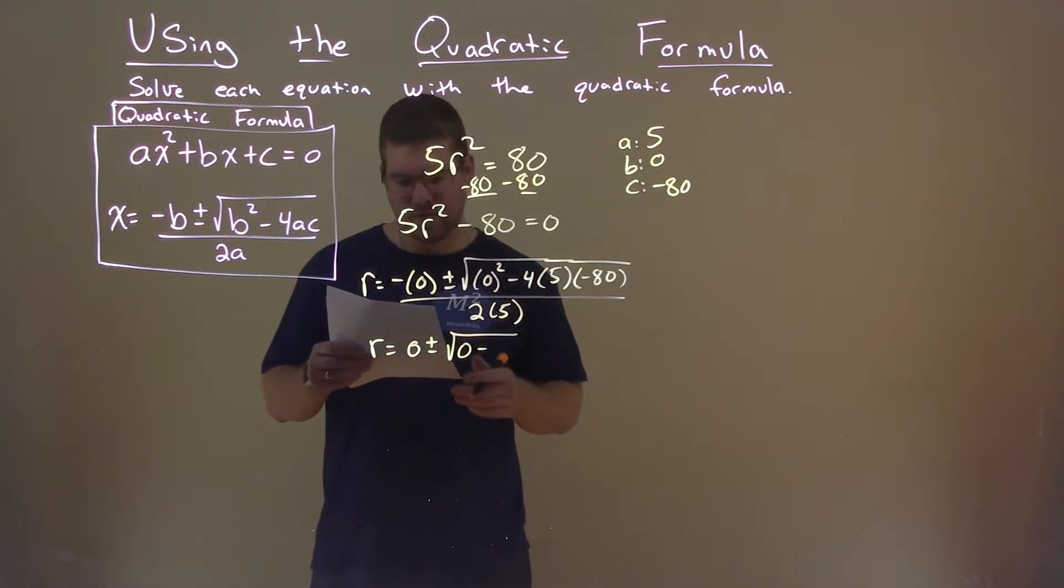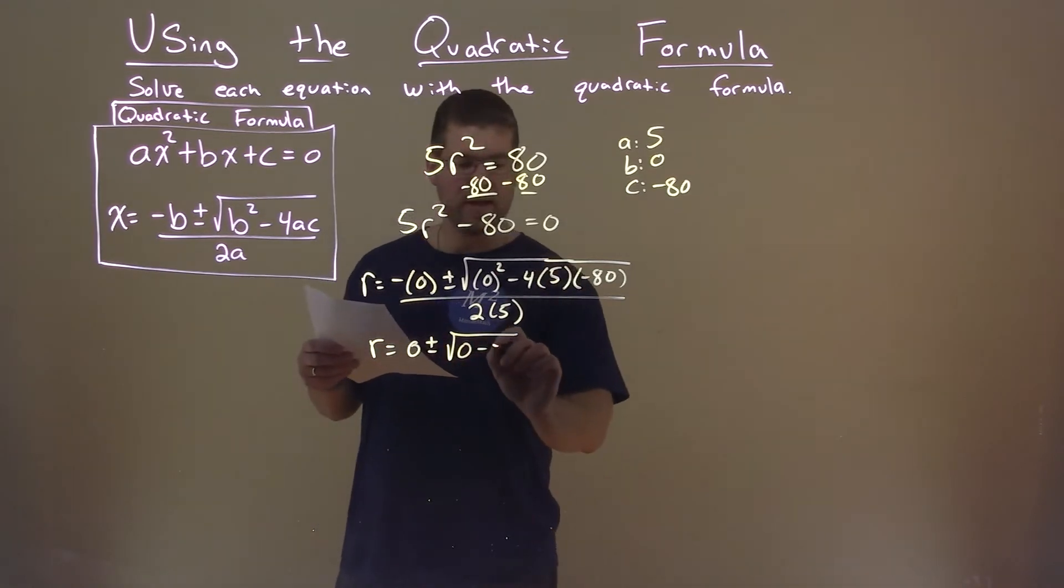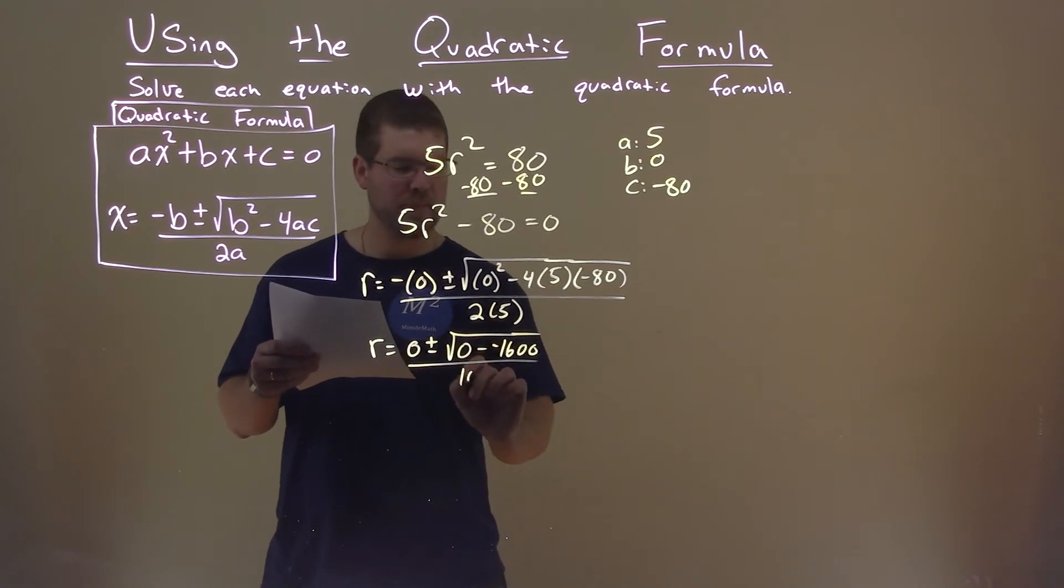Minus 4 times 5, times negative 80, is negative 1600, all over 2 times 5, which is 10. Now this minus and negative is like adding a positive.